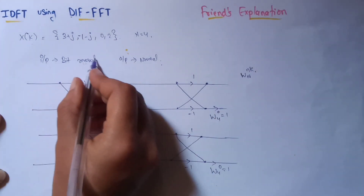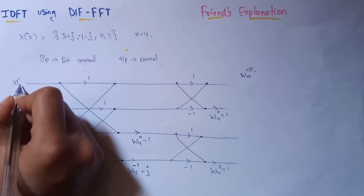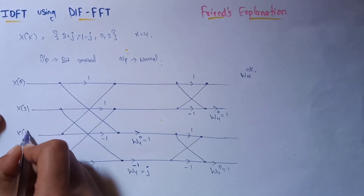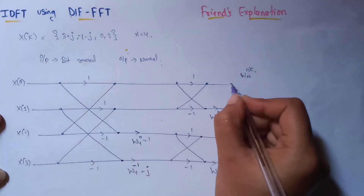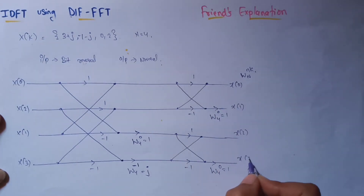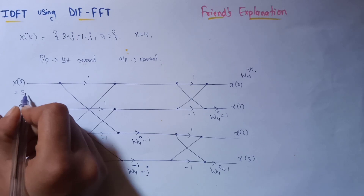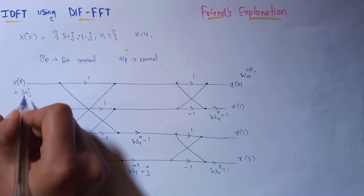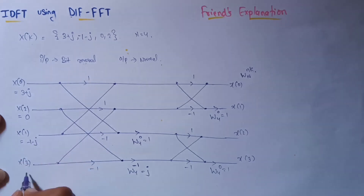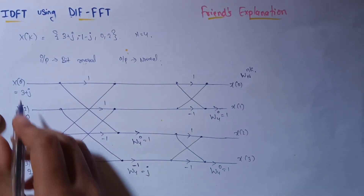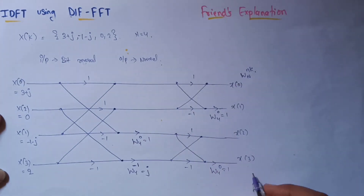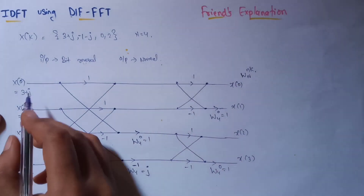Now let's take the input and output. The input is the frequency domain sequence in bit reversal order, so we take indices 0, 2, 1, and 3. The output will be in normal order: 0, 1, 2, 3. The input values are: 3 plus j, 0, minus 1 minus j, and 2. Now we will calculate the stage 1 output and stage 2 output one by one.